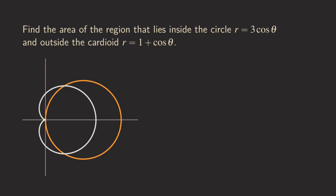The region that we are trying to find is this shaded part right here, and also this portion right here. So it's still inside the circle but outside the cardioid. This is the region that we want.